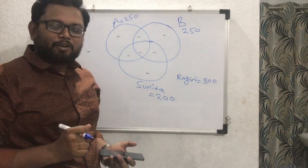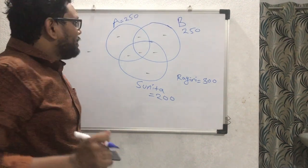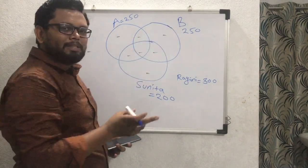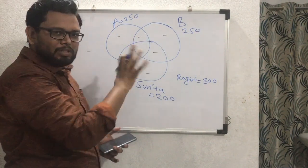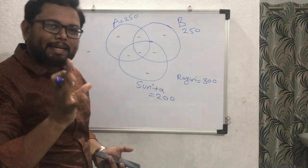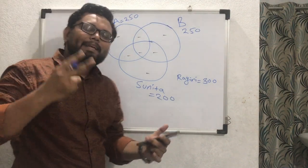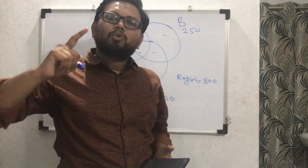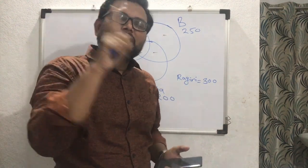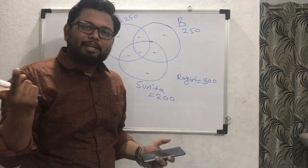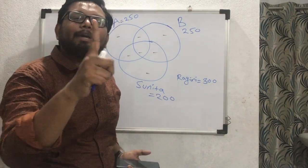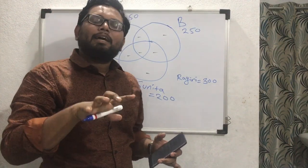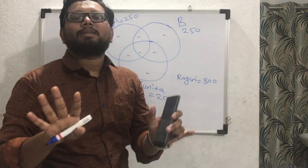This is an interesting question from Venn Diagram. There are two proposals, Proposal A and Proposal B. A student can support both proposals or might not support any proposal. There are two candidates, Sunita and Ragini. The condition is you are required to support either Sunita or Ragini — exactly one out of these two. If you don't support Sunita, that definitely means you are supporting Ragini.